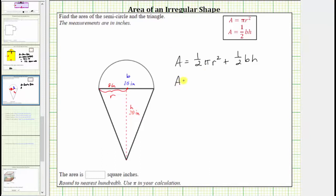The total area is equal to one-half times pi times the radius squared which should be the square of eight inches plus one-half times the base of 16 inches times the height of 20 inches.